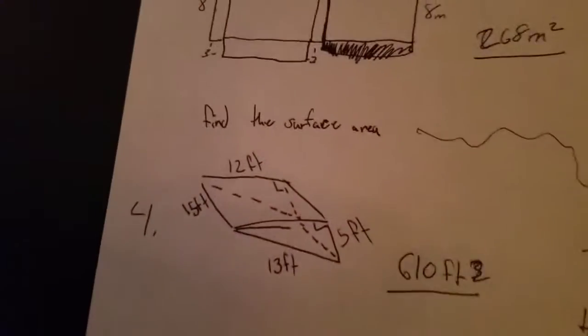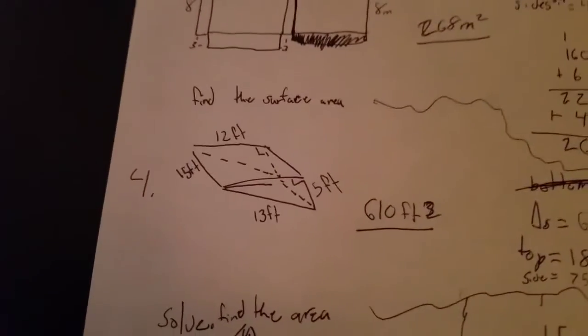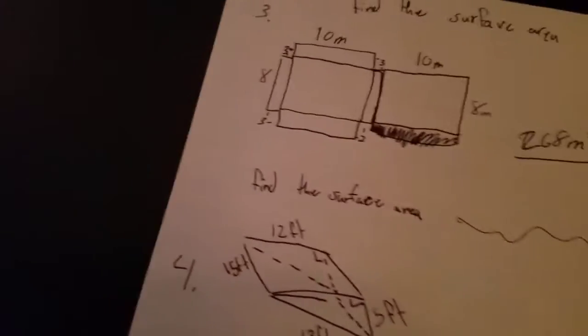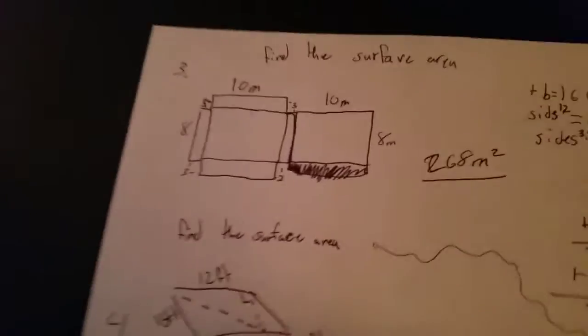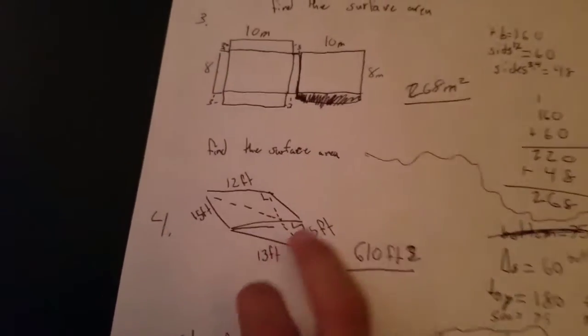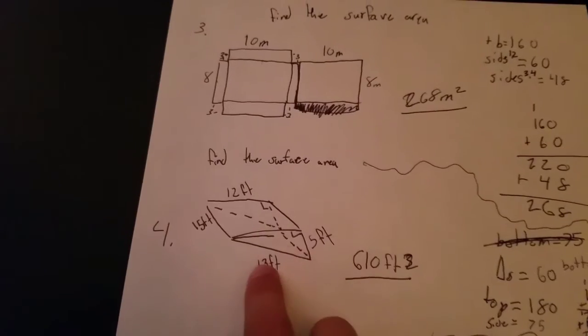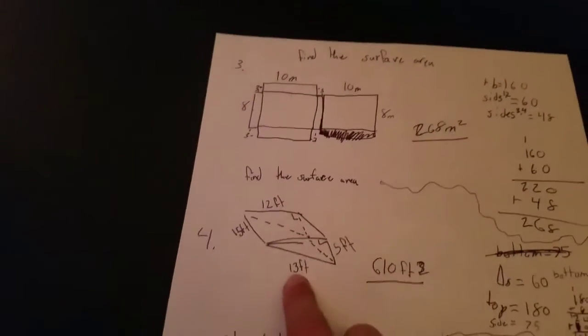The second one is finding the surface area as well. So our dimensions are 13, 5, 15, and 12. Now the 13 we are only going to use once. Because on the triangle, the 13 is basically a number that we don't really need. We will only end up using it once.